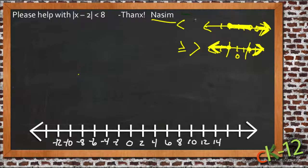If you are less than or less than or equal to, you're going to be graphed in between two values. So if we look at what Nassim has here, he has a less than. So we know that his expression is going to be between two different values.